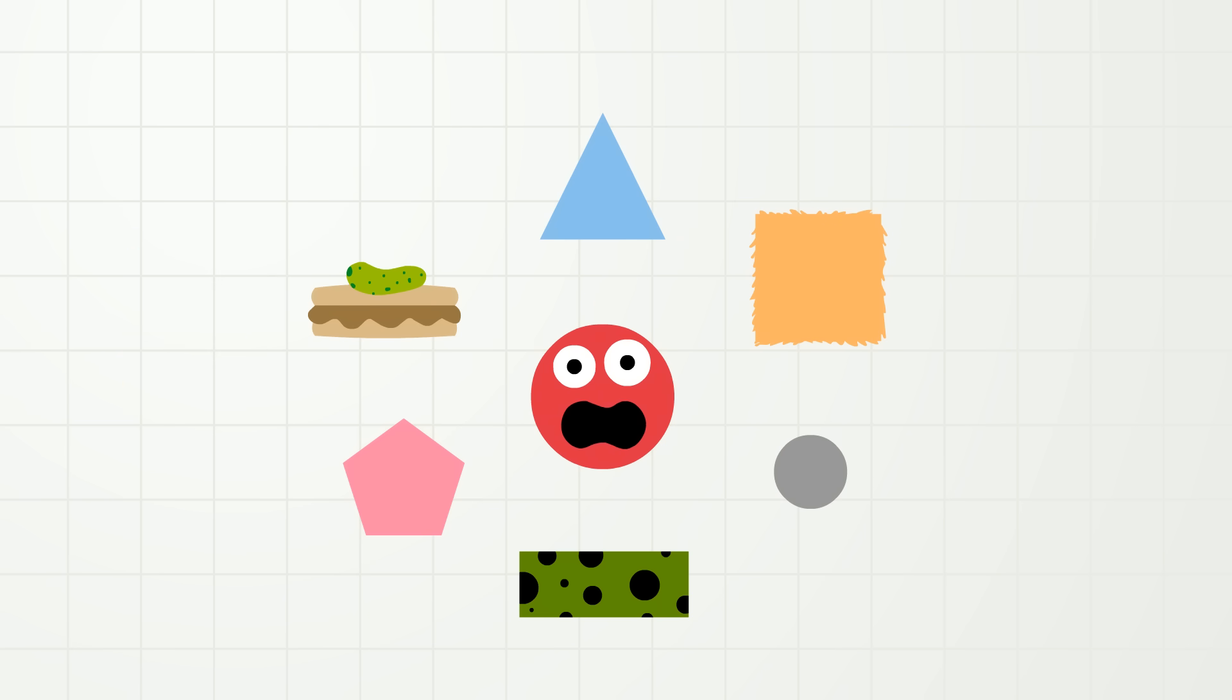And shapes all have something we call attributes. Attributes! That's right, attributes! Attributes! An attribute is something about a shape or something that a shape has that makes it different or similar to another shape.